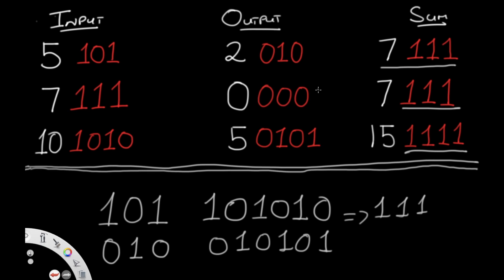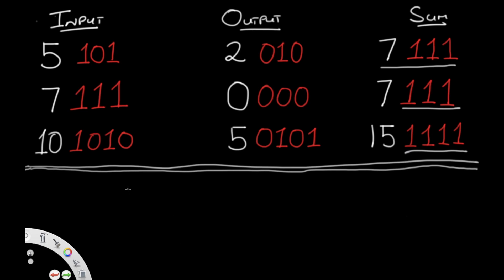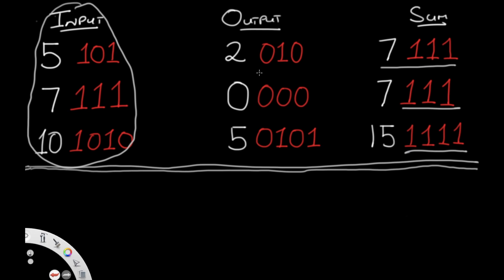This pattern is something we want to use in our code. The question is: how do we actually get to our output? Since we're given the input and we want the output, we need to find the sum value. The simple equation is: input plus output equals sum. So if we can find the sum, we can calculate output as sum minus input. The sum is a binary value with all 1s and has the same length as our input.